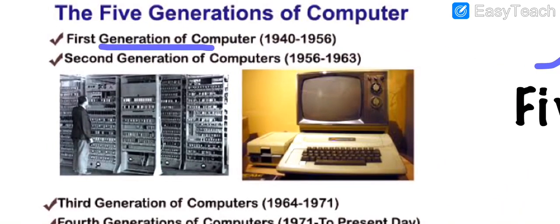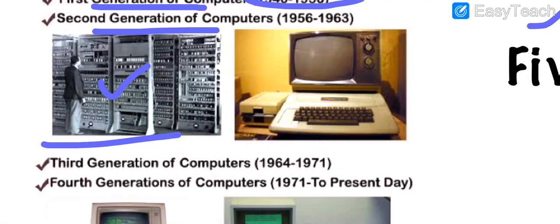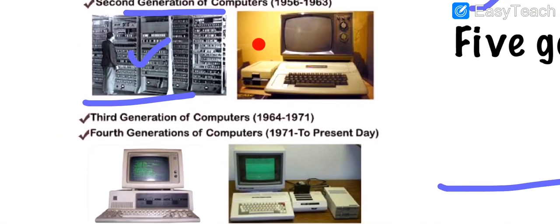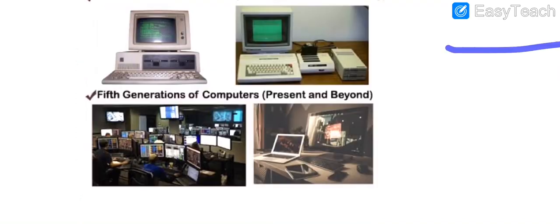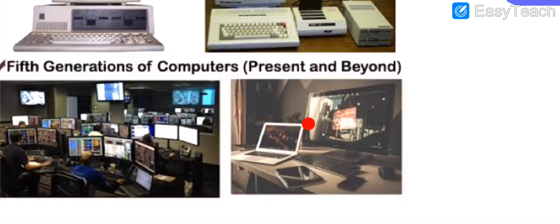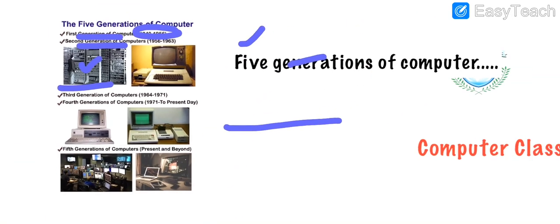There are five generations of computer and you can see these five generations. First generation of computer was used very early. Then we have second generation of computer. Earlier the computers were very, very big. Then the size was reduced and they were changed into different forms. They keep on evolving from generation to generation and their features and their looks also get changed. This is the fifth generation which we are using in present and which we will use beyond also.